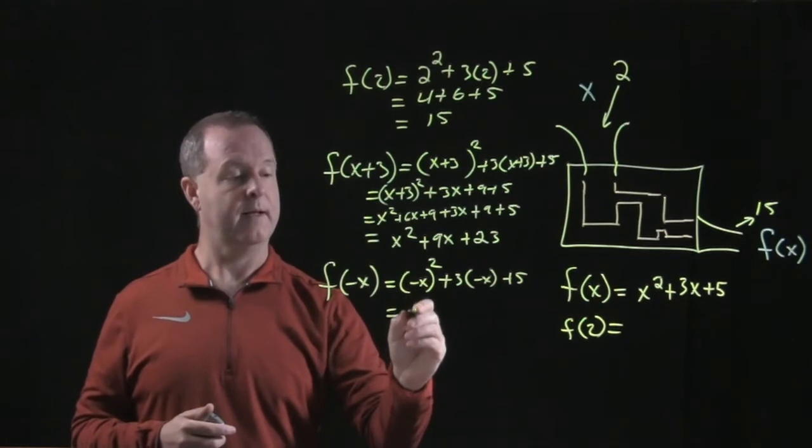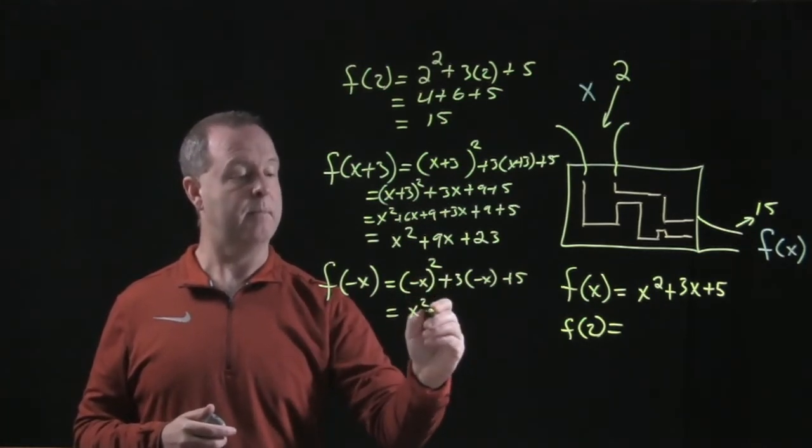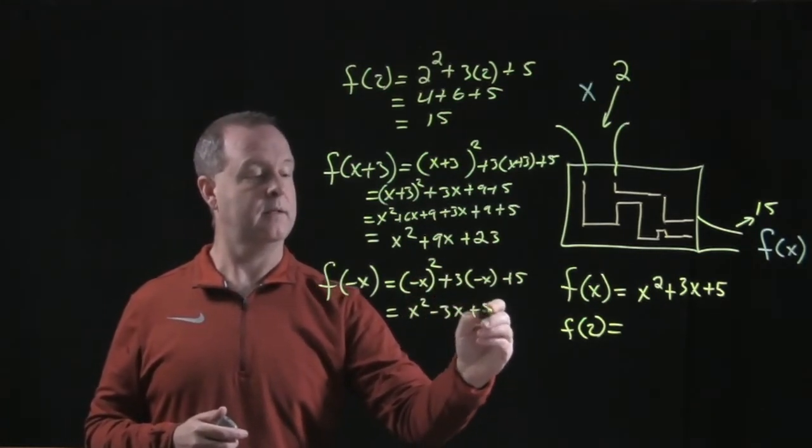Work that through. Negative x squared is x squared, minus 3x, plus 5.